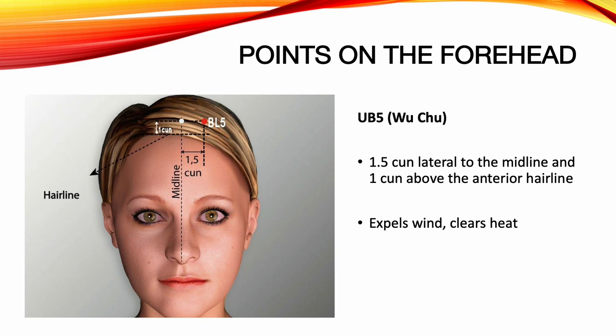Urinary Bladder 5, U-Chiu. Location: 1.5 Sun lateral to the midline, and 1 Sun above the anterior hairline. Functions: expels wind, clears heat. Indications: headache, dizziness, nasal congestion, blurred vision, failing vision, seizures.